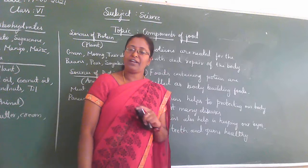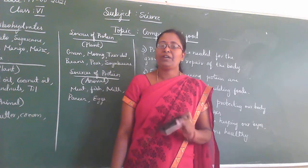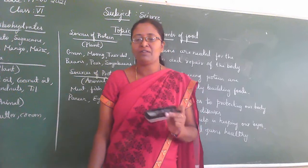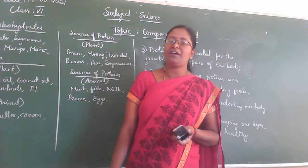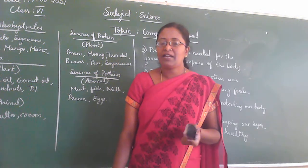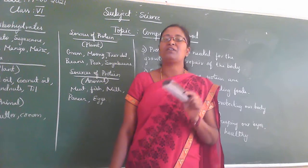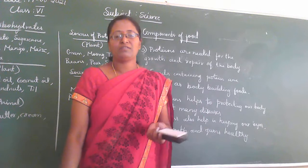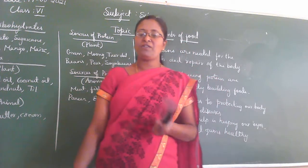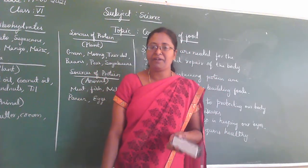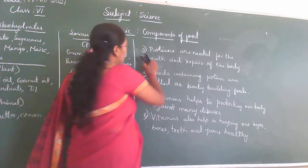Vitamins are of different kinds and are known by different names. Some of these vitamins are Vitamin A, Vitamin C, Vitamin D, Vitamin E, and Vitamin K. So vitamins are of different kinds present in our food items.